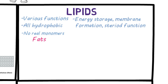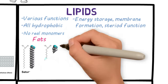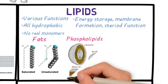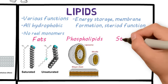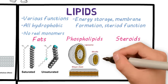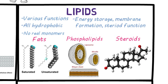Fats include triglycerides and saturated and unsaturated fats. You also have phospholipids, which form the cellular membranes. And then steroids, which include all sex hormones, and all the steroids form from a cholesterol base. All of those are included in lipids, so it's pretty diverse.